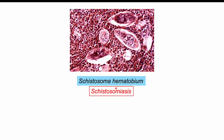Schistosoma hematobium, along with some other similar species, can cause a condition known as Schistosomiasis. We're going to focus on Schistosoma hematobium because this is the one that increases the risk of bladder cancer. The Schistosoma hematobium species can be recognized by what we call a terminal spine — a spine on one end — as opposed to a lateral spine, which we see in other species such as Schistosoma japonicum.